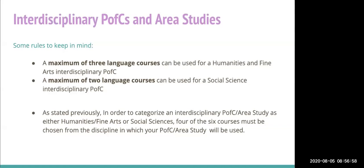Language courses count as humanities/fine arts courses for these interdisciplinary PFCs. A maximum of three language courses can be used for a humanities and fine arts interdisciplinary PFC, and a maximum of two language courses for a social science interdisciplinary PFC. You can have a mix and match PFC and an interdisciplinary PFC simultaneously — for instance, a sociology major can declare both a Science and Technology PFC and a Latin American Studies PFC, using the four-of-six rule for the humanities and fine arts requirement.